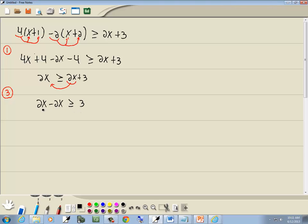Combine together like terms. 2x minus 2x is 0. And we get 0 is greater than or equal to 3. Now we have a problem here. We were solving for x and our x disappeared.